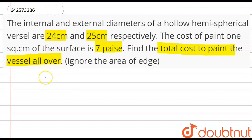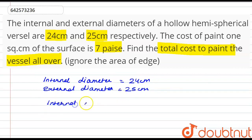We are given that the internal diameter is 24 cm and the external diameter is 25 cm. This means that the internal radius, that we can denote as small r, is 24 by 2, which is 12 cm, and the external radius, that we can denote as capital R, is 25 by 2, that is 12.5 cm.